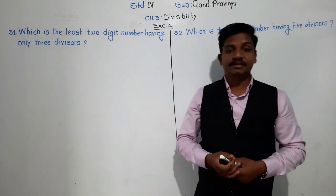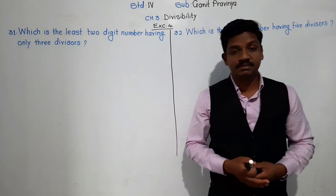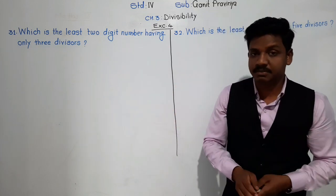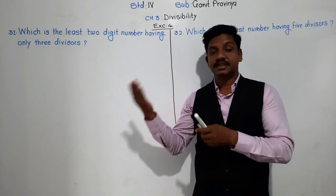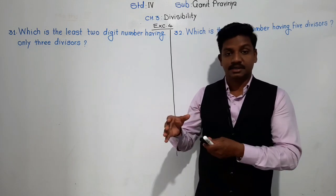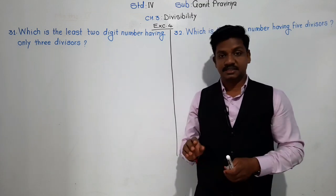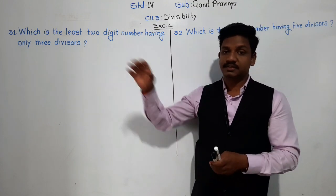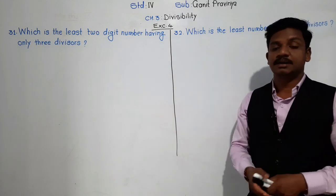Once again I will repeat the definitions of multiples and divisors. Multiples means the numbers which come in the table of the given number, or the numbers which are divisible by the given number. Divisors are the opposite of that — the number by which the given number is divisible, or the numbers in whose table the given number appears.